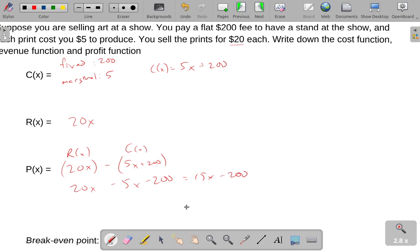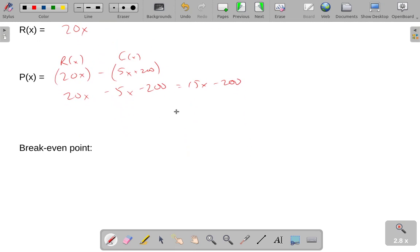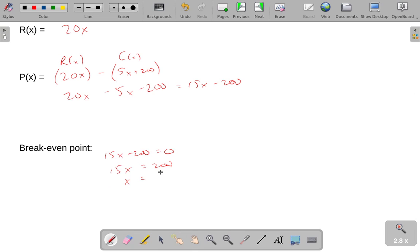There's your profit function. The break-even point is where your profit function equals 0. So 15x minus 200 equals 0. Solving this, we get 15x equals 200. Divide both sides by 15, we get x equals 13.3 repeating.